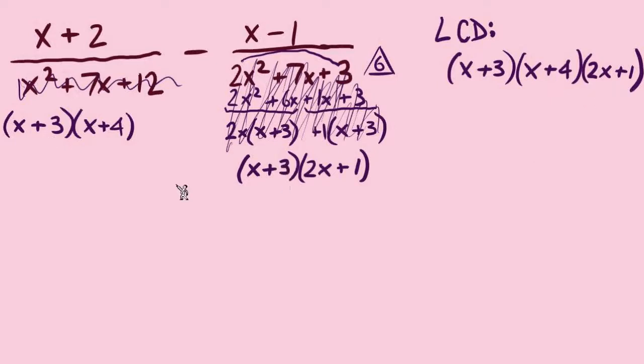And remember, just because we have a total of 2 x plus 3s, we're seeing just 1 in this side, 1 on this side. That's why we need only 1.